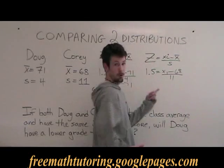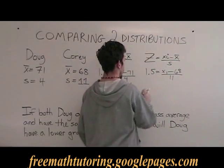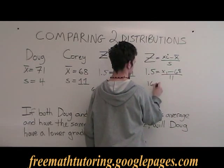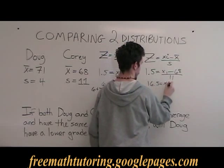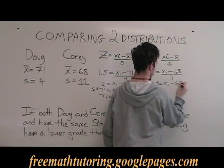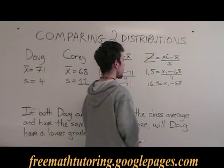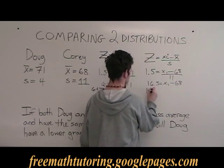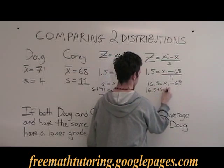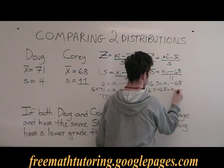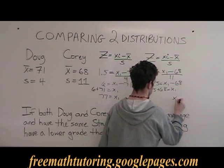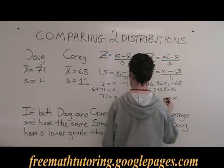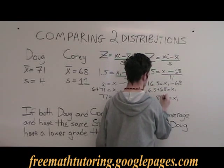And for Corey, 1.5 times 11 is 16.5. Bringing the 68 over, which becomes positive, so 16.5 plus 68 — Corey's mark is 84.5.